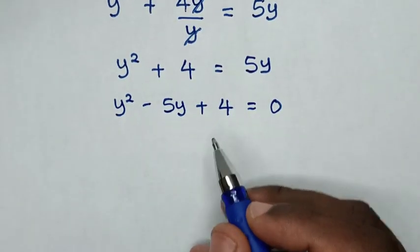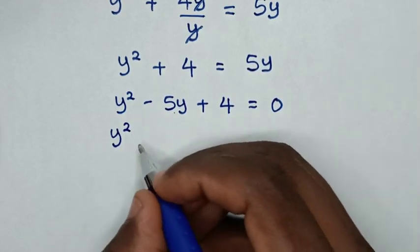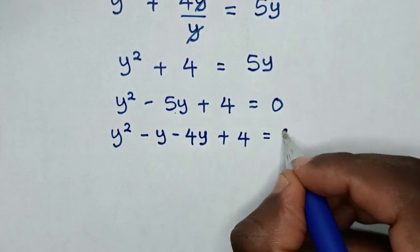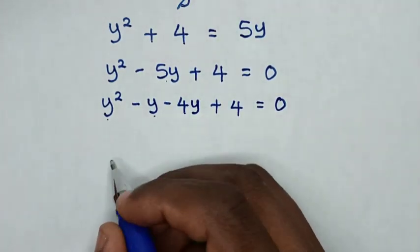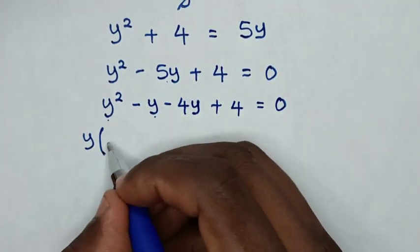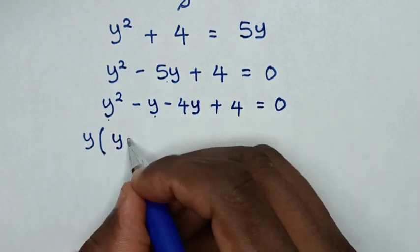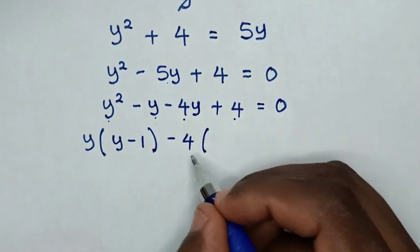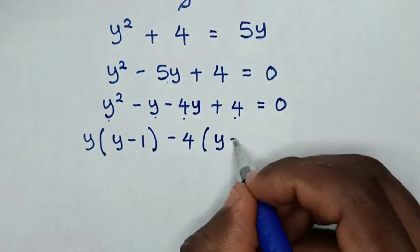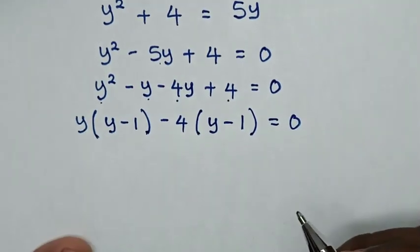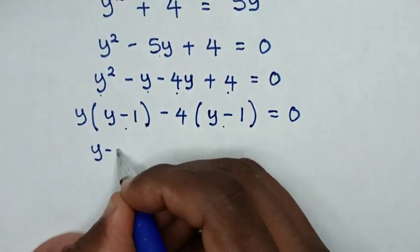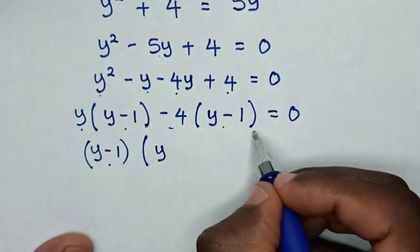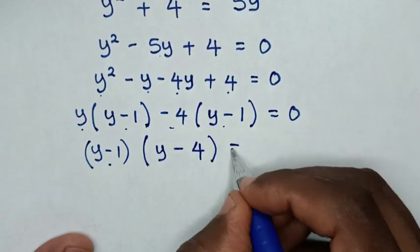We solve this quadratic equation by factorization. It will be y squared minus 5y, split as negative y plus negative 4y, plus 4 equals 0. Taking y as common from the first two terms gives y(y minus 1), and taking negative 4 as common from the remaining terms gives negative 4(y minus 1), equal to 0. So it factors as (y minus 1)(y minus 4) equal to 0.